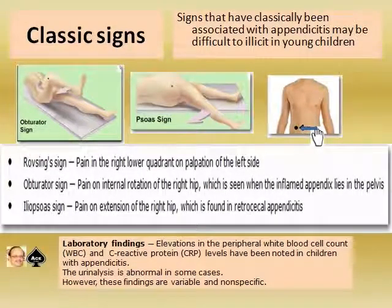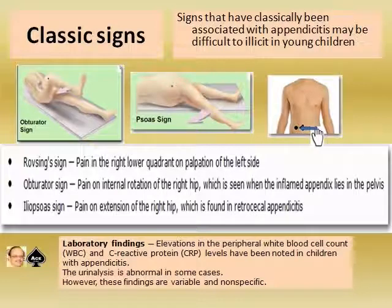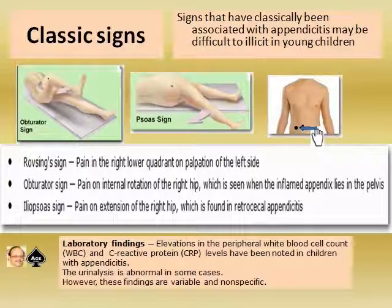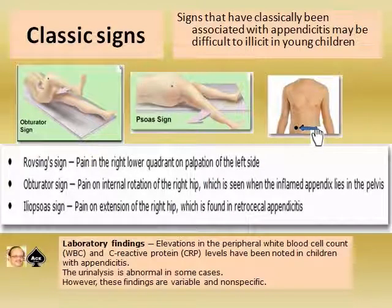The classic signs associated with appendicitis may be difficult to elicit in young children: the obturator sign, psoas sign, and Rovsing's sign. Rovsing's sign is pain in the right lower quadrant on palpation of the left side. The obturator sign is pain on internal rotation of the right hip, seen when the inflamed appendix is in the pelvis. The iliopsoas sign is pain on extension of the right hip, found in retrocecal appendicitis.